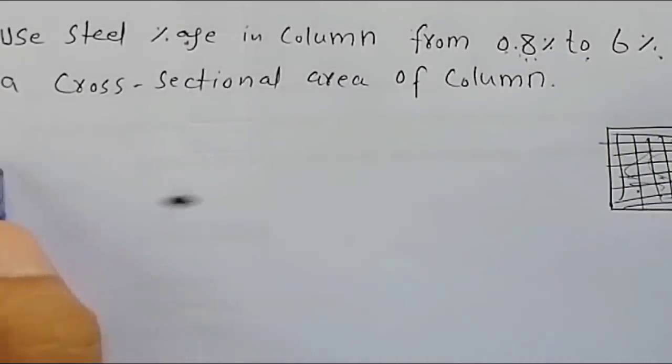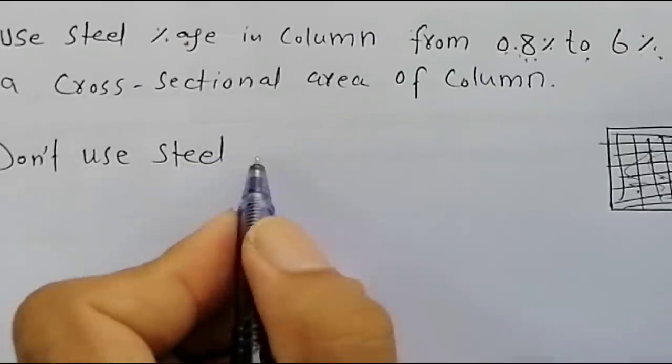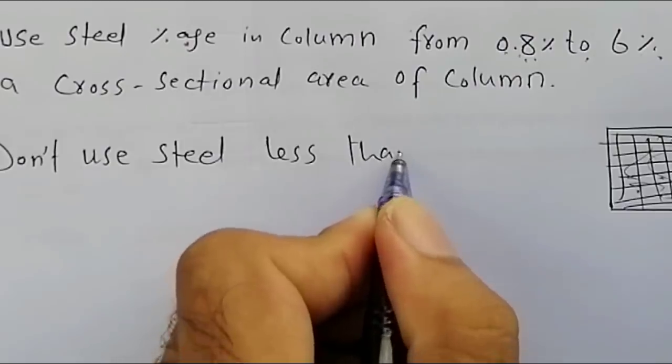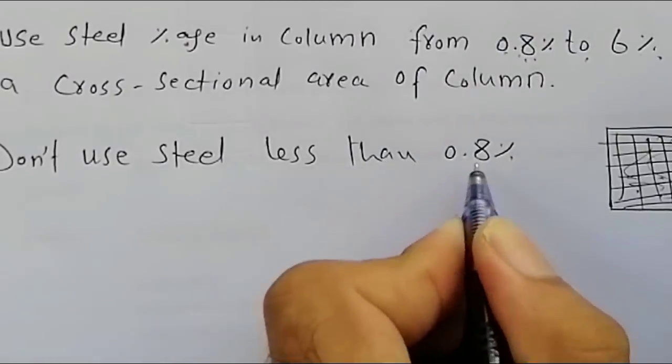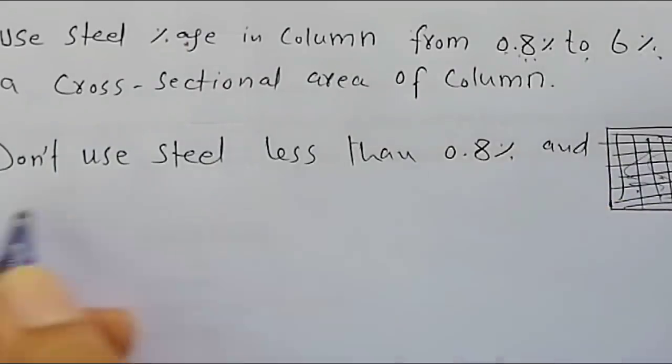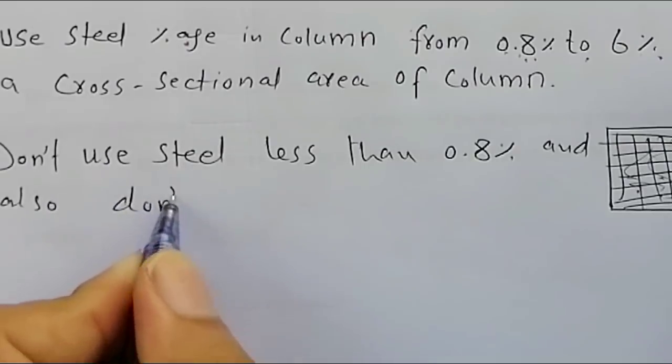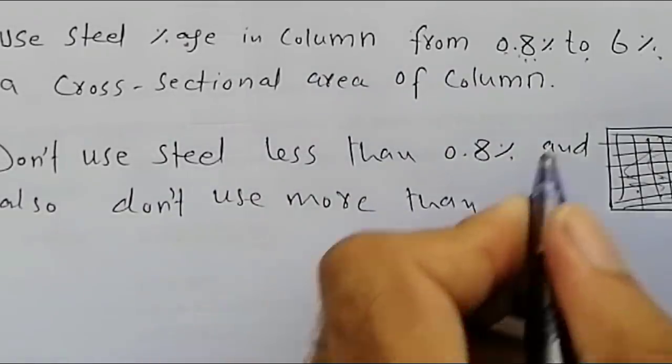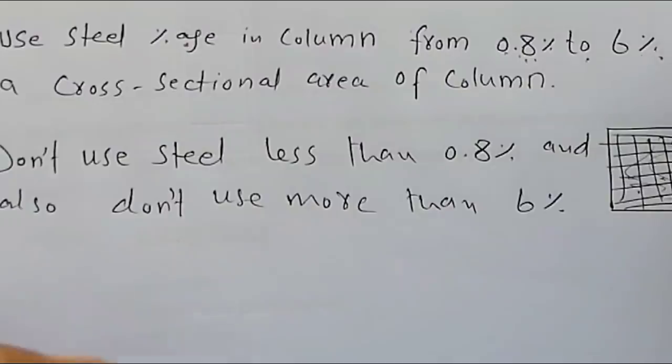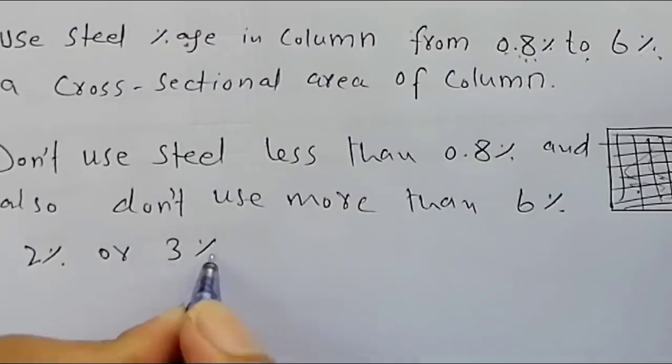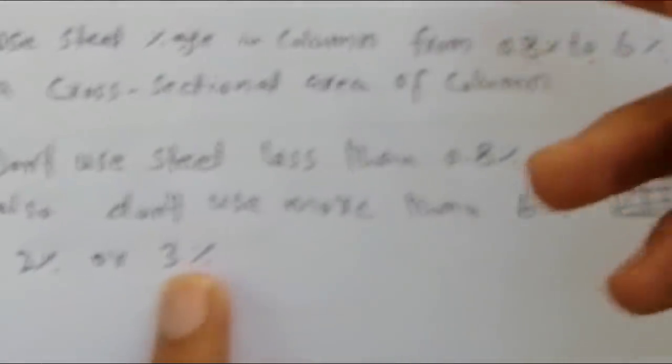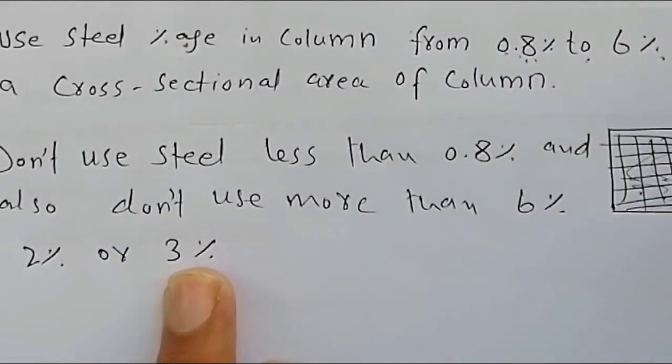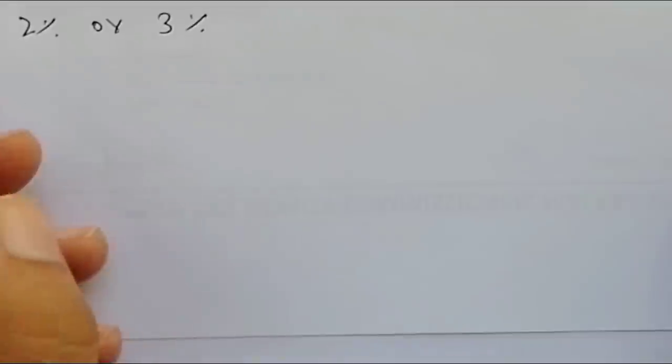But remember, don't use steel less than 0.8% in column, and also don't use more than 6%. You can take 2% or 3%. It depends on you due to design structure. These are too much important. Now remember some other points.